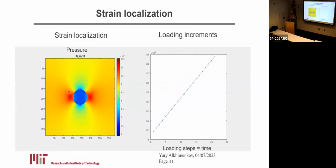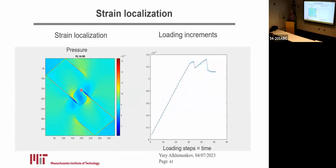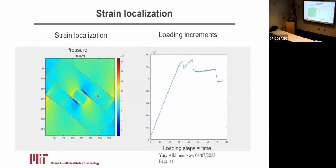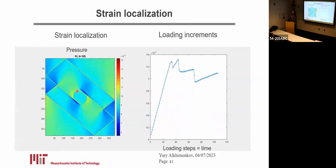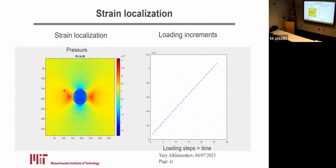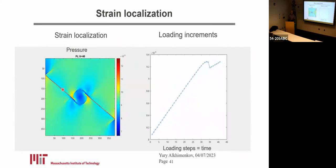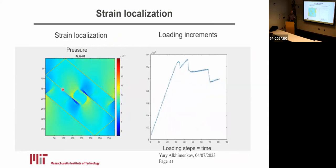If you think of a fault, that's actually what's happening. This is a simplified example of how we can develop a realistic fault and take into account the heterogeneous stress field around and inside the fault. The pressure field is completely different inside the strain localization versus the surrounding domain.